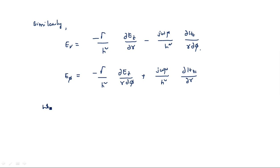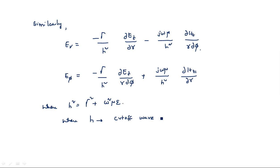These are the four field equations, where h² is equal to γ² + ω²με. Here h refers to the cut-off wave number. The remaining parameters: γ is the propagation constant, ω is the angular frequency, and μ and ε are permeability and permittivity. These are the field equations of the circular waveguide derived from rectangular waveguide equations in terms of r and φ. In the next video we will see the TM and TE analysis for this circular waveguide. Thank you.